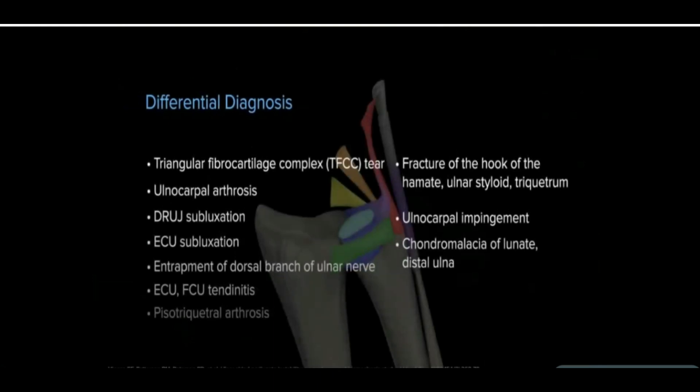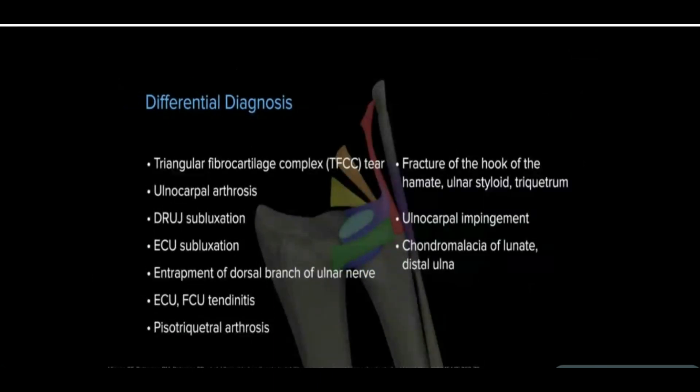Differential diagnoses include TFCC tear, ulnocarpal arthrosis, DRUJ pathology, extensor carpi ulnaris subluxation, among many others.